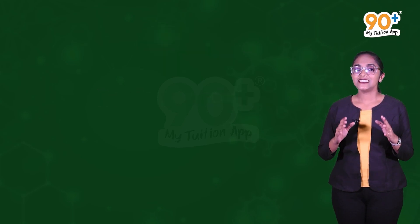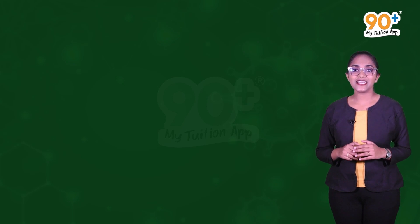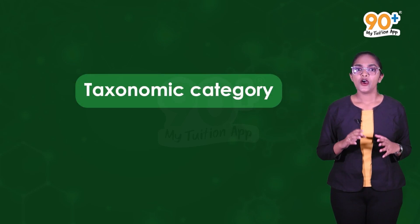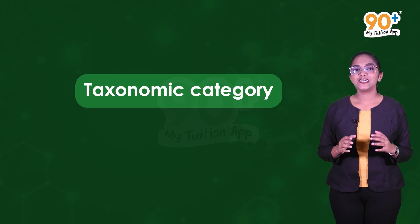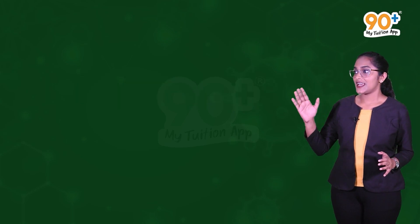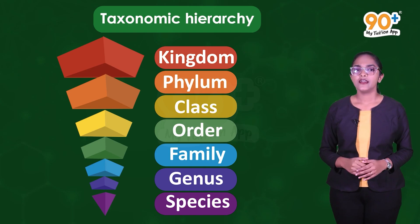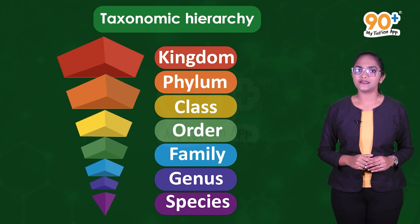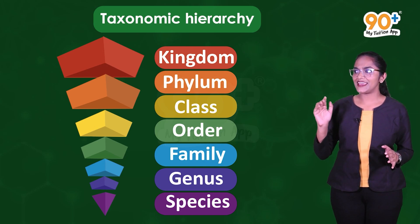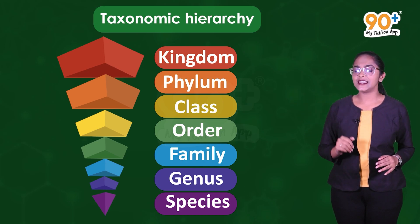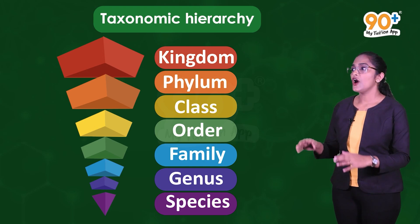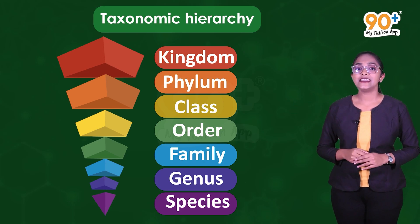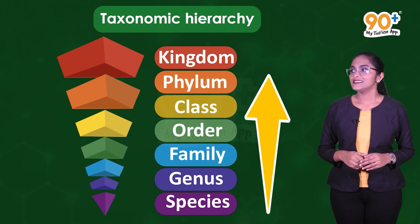Since it is a part of taxonomic arrangement, we can call it a taxonomic category. All the taxonomic categories together constitute the taxonomic hierarchy. As you can see, this is the arrangement of taxonomic categories, or taxon, or rank, in ascending order, and we are calling it a taxonomic hierarchy.